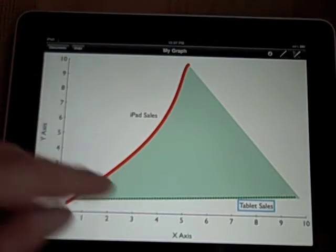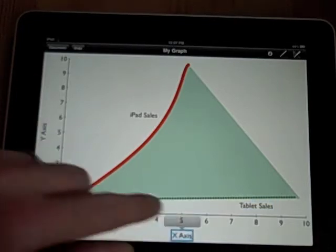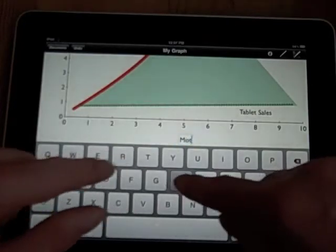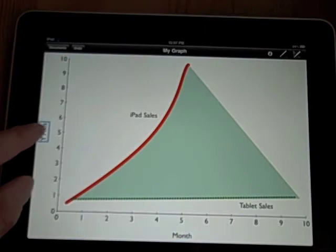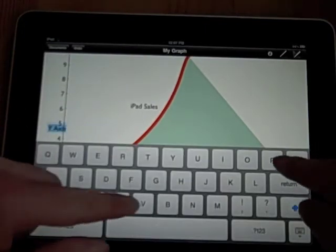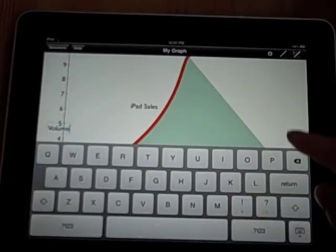Now we need to know what these axes represent. So down at the bottom, I'll double tap, and I'll call this Month, and I'll call this Volume. All right.